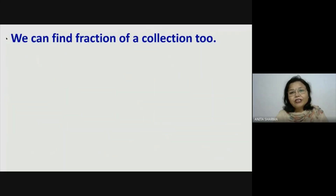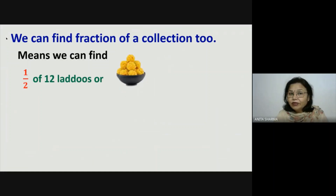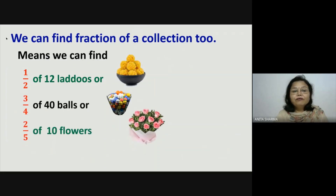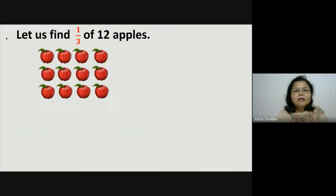We can find fraction of a collection too. Means we can find half of 12 blood dues, or 3 fourths of 40 balls, or 2 fifths of 10 flowers. So let us understand it by taking a few examples. Let us find one third of 12 apples.